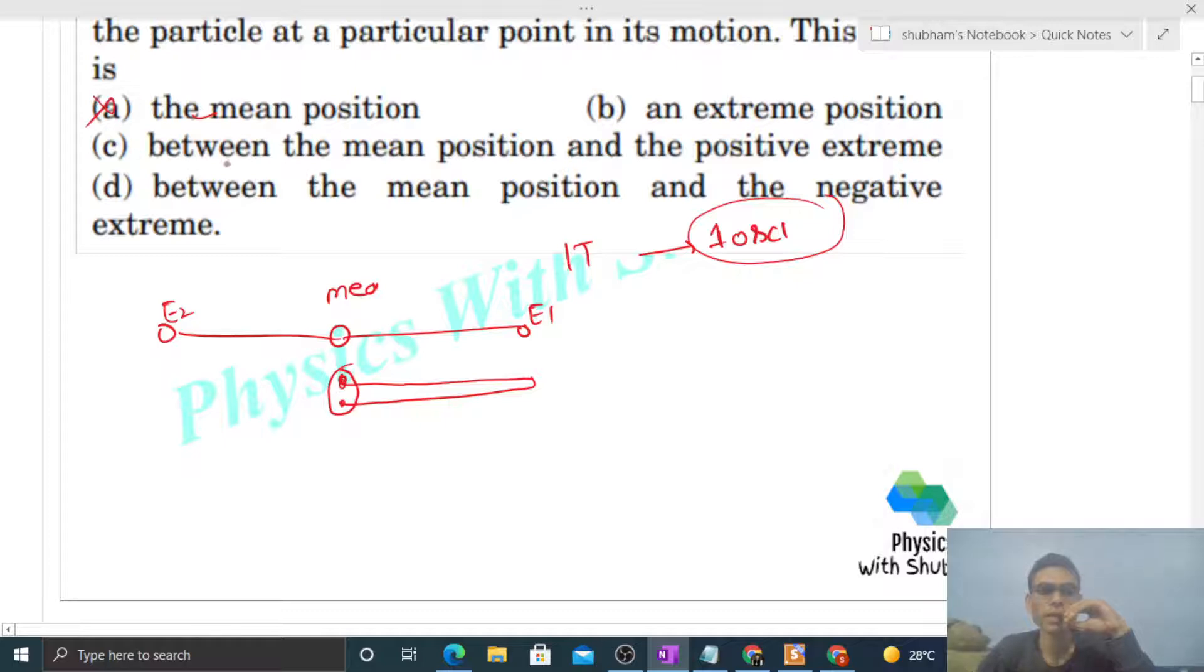Right, so option A is wrong. Between the mean position and the positive extreme, if we take some point A between mean position and positive extreme, then if the particle starts from point A, next time when the particle is at point A, has one oscillation completed? Check it. It went to the extreme, came back to A. Still one oscillation has not happened. It means option C is not correct.